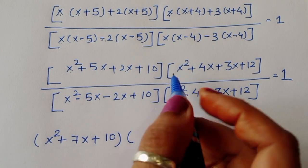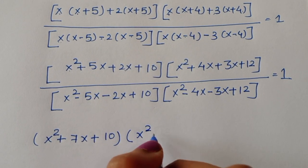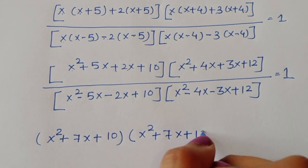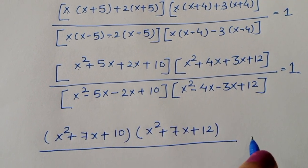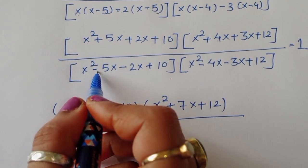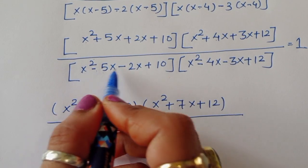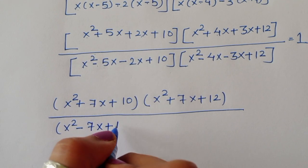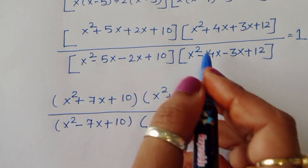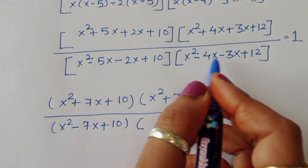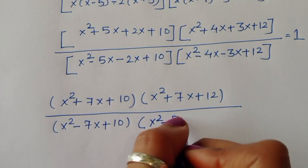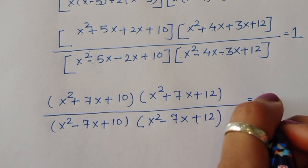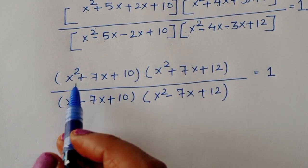Simplifying: the numerator becomes (x²+7x+10)(x²+7x+12) and the denominator becomes (x²-7x+10)(x²-7x+12), all equal to 1.